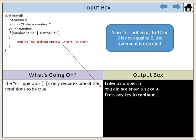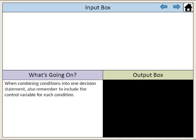Here, the user enters the value 5. Since 5 is not equal to 12 or 5 is not equal to 9, the statement is executed. When combining conditions into one decision statement, also remember to include the control variable for each condition.